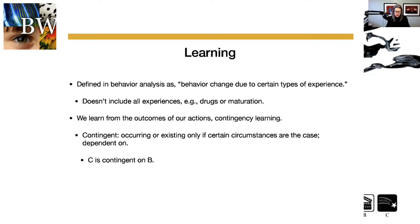When we use the word 'contingent,' we're talking about behavior that is only occurring or existing if certain circumstances are the case. Another word for contingent — because it is a strange word people often have trouble with — is 'dependent on.' We're talking about behavior change that's dependent on what the environment, context, or conditions are doing. The appearance of the consequence is contingent on the behavior occurring. That's really what we mean by learning: behavior change due to certain types of experience given certain conditions.